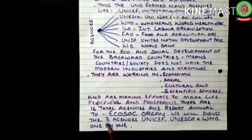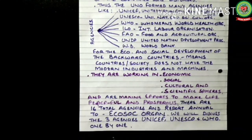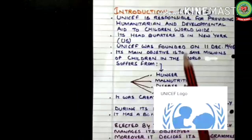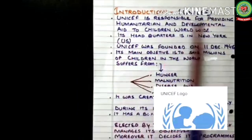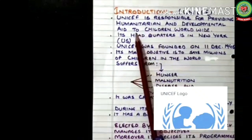There are 16 total agencies and they report annually to ECOSOC — the Economic and Social Council. We will discuss the three major agencies: UNICEF, UNESCO, and WHO one by one. Now, introduction of UNICEF: UNICEF is responsible for providing humanitarian and developmental aid to children worldwide.